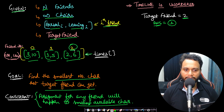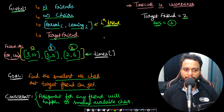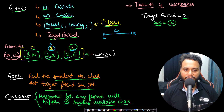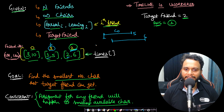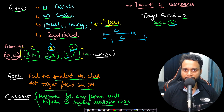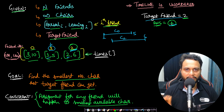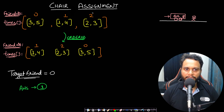For example, if the target friend is 2, the first person arriving (friend 1 at time 1, leaving at 5) sits on chair 0. The second person (friend 2 arriving at time 2, leaving at 6) gets the next smallest available chair, which is chair 1. So the answer is 1. Once we process the target friend we immediately return and stop.